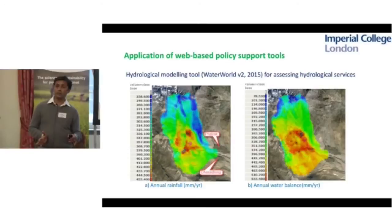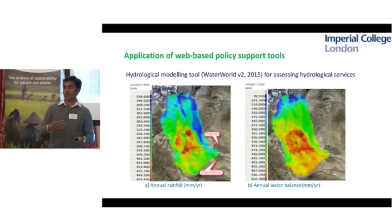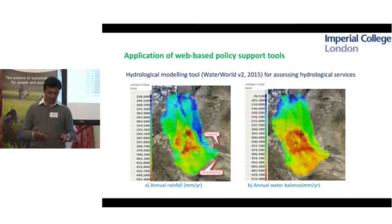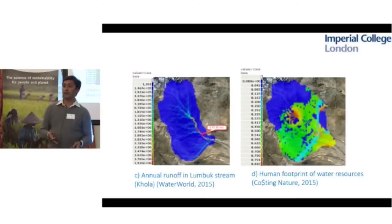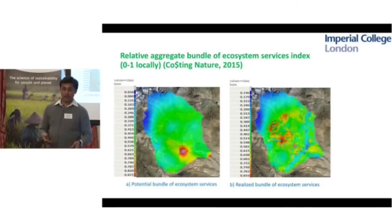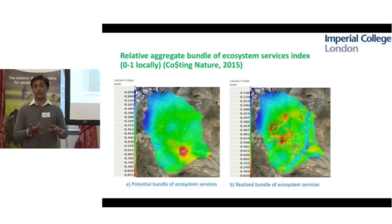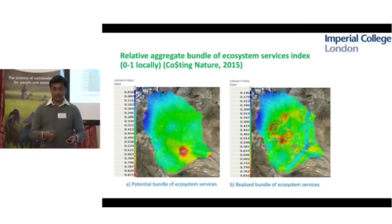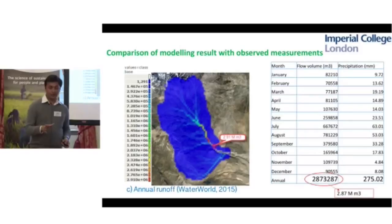We applied WaterWorld, a policy support tool, for understanding rainfall patterns and annual water balance — meaning water availability for agricultural use — including runoff along the river, human footprint in the catchments based on agricultural practices, grazing, and human intervention. An aggregate bundle of ecosystem services is also realized, considering services including water, land, pasture land, and species richness.